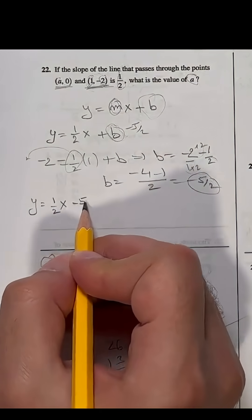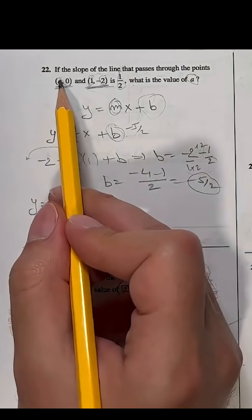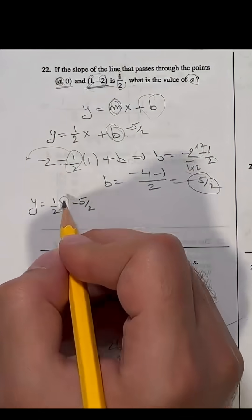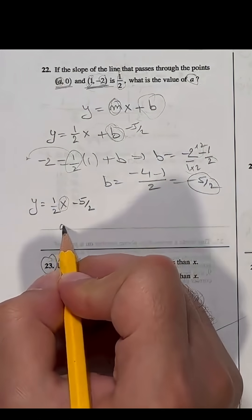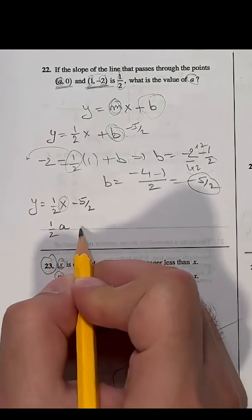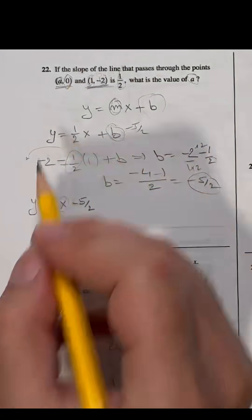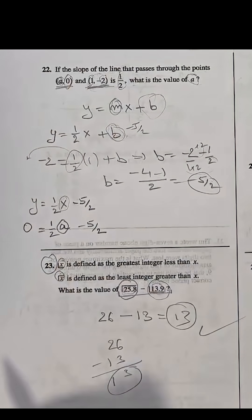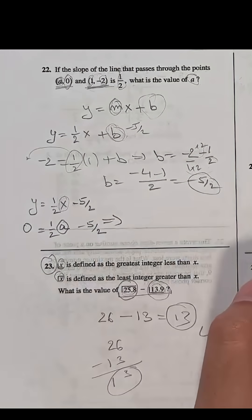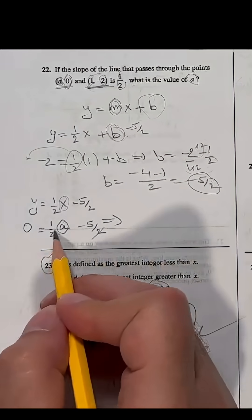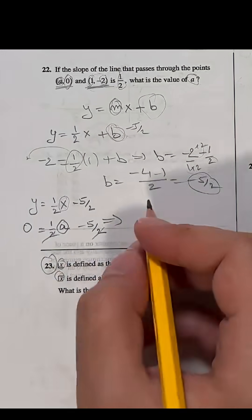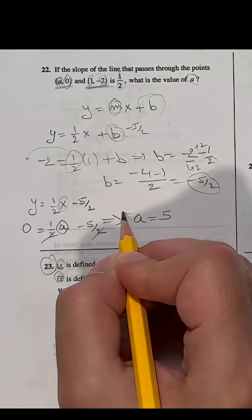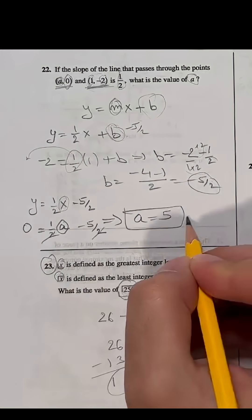Now to find a, replace x and y of the equation with the coordinates of the point (a, 0). Replace x with a and y with 0. Now we have one equation, one unknown which is a. Solving for a gives us a equals 5.